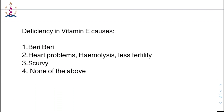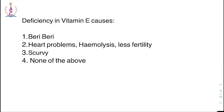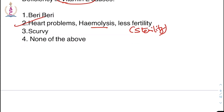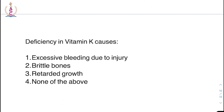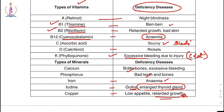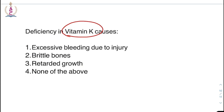Deficiency of vitamin E — options: goitre, beriberi, heart problems and hemolysis and less fertility, scurvy, or none of the above. The right answer is heart problems, hemolysis, and sterility. Deficiency of vitamin K — options: clot over the blood, excessive bleeding. The right answer is excessive bleeding due to injury, as vitamin K is required for blood clotting.